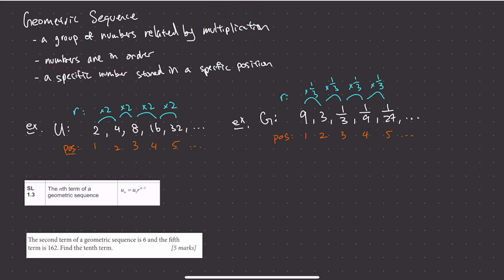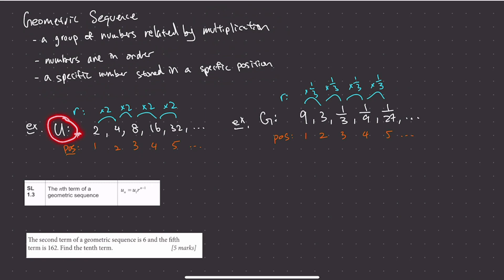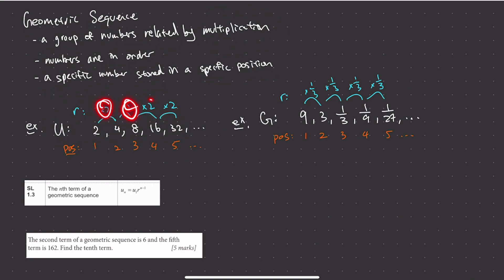Similarly to arithmetic sequences, in geometric sequences the numbers are in order, meaning there are specific numbers stored in specific positions. For example, consider a geometric sequence named u with values 2, 4, 8, 16, 32. We can see the numbers are related by times 2 — multiplication by 2 every single time. We call this the common ratio. In arithmetic sequences we call it common difference; in geometric sequences we call it common ratio.